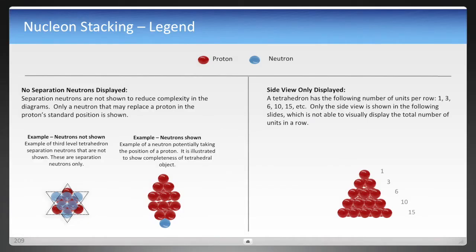Here's a legend before we get into the details. It's for simplicity. Only protons are shown, with the exception of when a neutron takes the place of a proton. Only the side view is displayed, as it becomes very complex to illustrate all these. But you can see the tetrahedral numbers there: 1, 3, 6, 10, and 15.